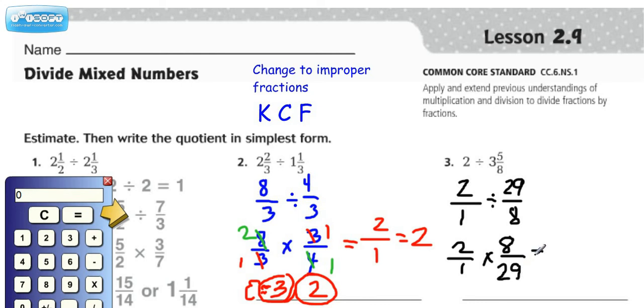Now some people get confused and they think they can reduce here. But it has to be a numerator and a denominator if you're going to reduce. So that means we don't have any reducing opportunities. So let's go right across.